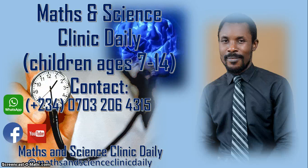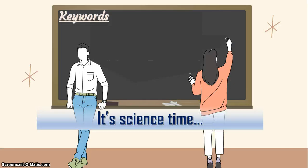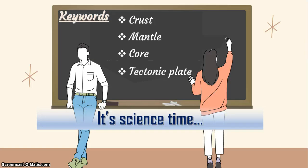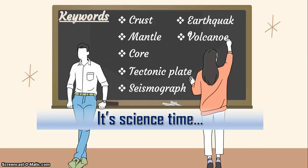So, what have we learnt so far? Let's have the keywords: crust, mantle, core, tectonic plates, seismograph, earthquakes, and volcanoes. Let's repeat them: crust, mantle, core, tectonic plates, seismograph, earthquake, and volcanoes.